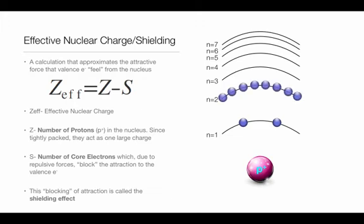When we get to the second energy level, we have the first energy level electrons between the nucleus and the second energy level. Those first energy level electrons repel outwards a little bit those second energy level electrons.